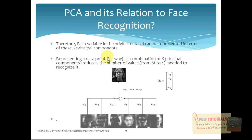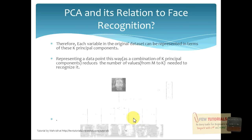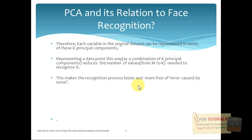Representing a data point this way — representing an image as a combination of K principal components — reduces the number of values from M to K needed to recognize it. Before, a training set of M images, where M could be 400, is now represented in terms of K eigenfaces, where K could be like 50. So 50 is very much less than 400. Naturally, this makes the recognition process faster and also more free of error. Why free of error? Because we discarded all those noisy eigenfaces, meaning we actually discarded all the noise in the dataset, so noise will have the least effect on the results of recognition.